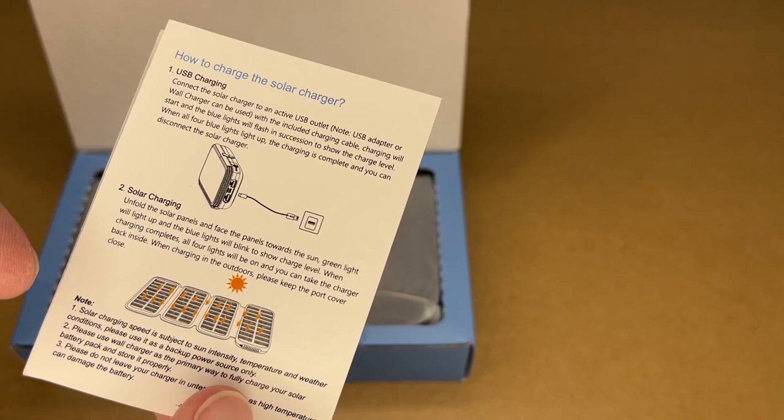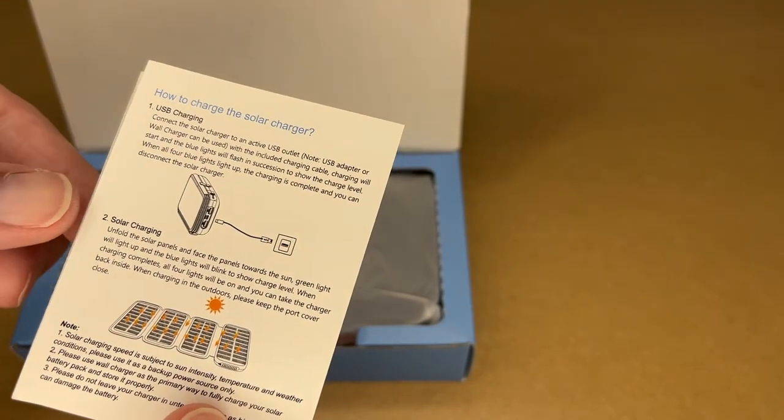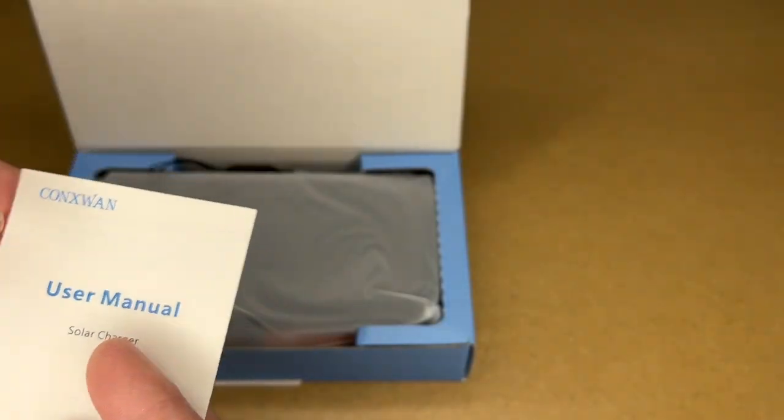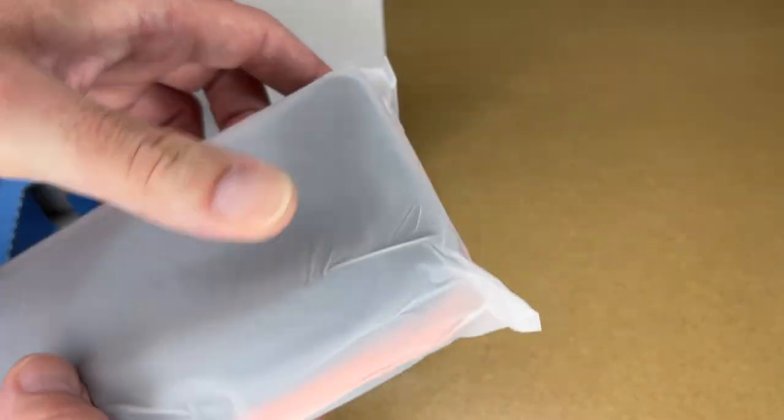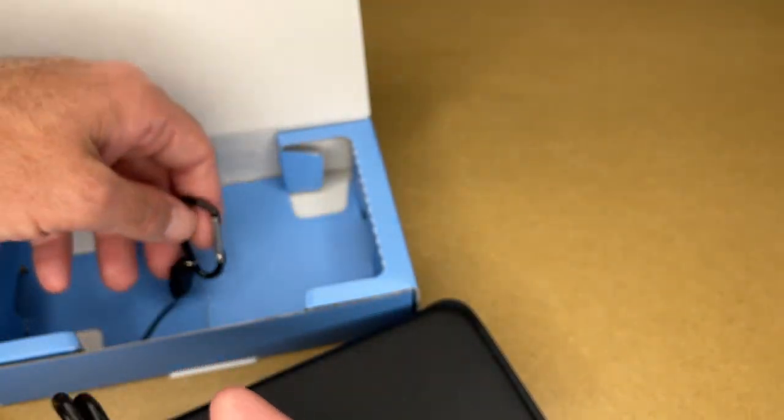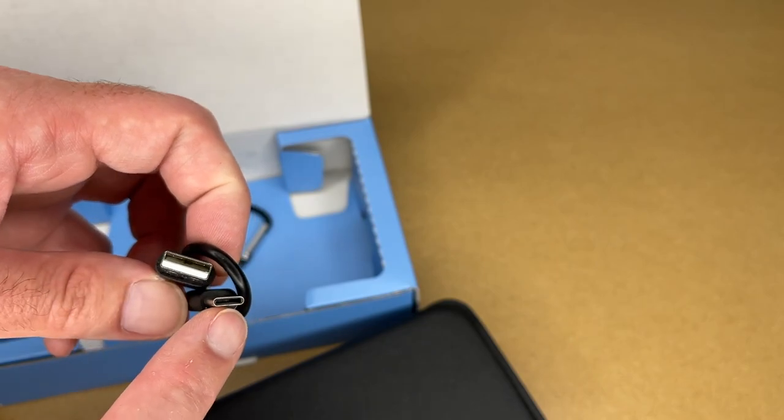Having the solar panels on the power bank will increase the amount you can charge your devices. This talks about charging your devices. Here's some FAQs, warnings. I'll pull this out. There's the power bank. This also comes with a little lanyard with a carabiner clip, and it comes with a USB-A to USB-C charge cable.